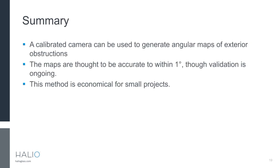In summary, a calibrated camera can be used to generate angular maps of obstructions. The maps are thought to be accurate within one degree, though more validation is ongoing. We need to test sun positions over a wider area of the map. At about five minutes per obstruction map, this method is economical for small projects. For large projects, it might be used to validate a ray-traced map in situ after a building is built.